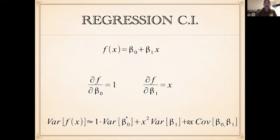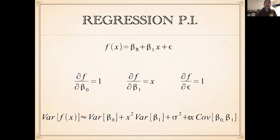We can extend this to predictive intervals as well. If we're interested in our predictive interval, then we have intercept plus slope times x plus our residual error. The derivatives of the first two terms are the same as before, and the derivative with respect to the residual error is just one. So we have the same terms as before — variance of beta_0, x squared times variance of beta_1, two times x times covariance between beta_0 and beta_1 — plus the variance of epsilon, which is just sigma squared by definition. It's common to assume there's no covariance between the residual error and the model parameters, which bears out in most applications.